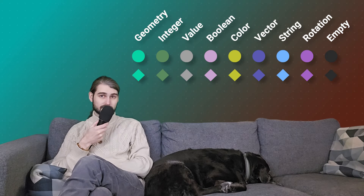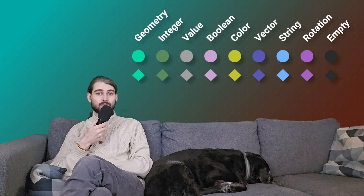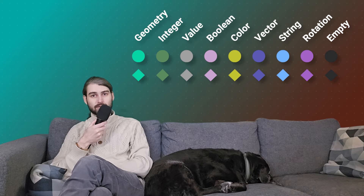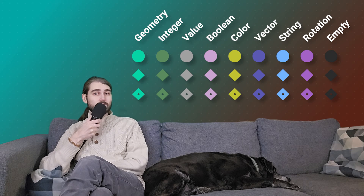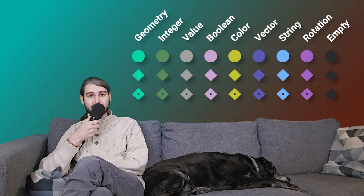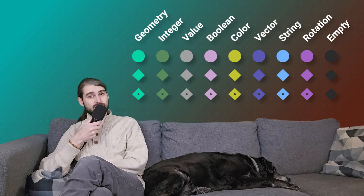We have diamond sockets, which can input and output fields and can also operate on single values, but in that case they will only output a single value. And we have the diamond with a dot, which is just a visual indicator that this socket can work on a field but currently it's just working on a single value.